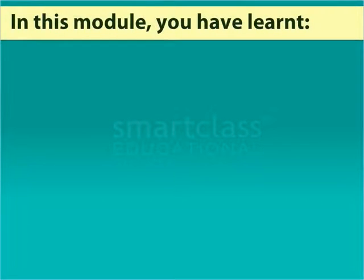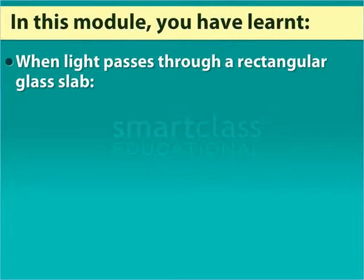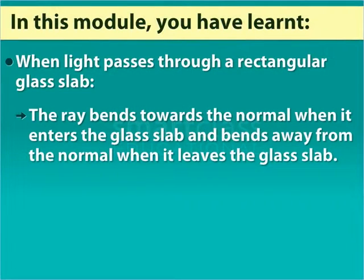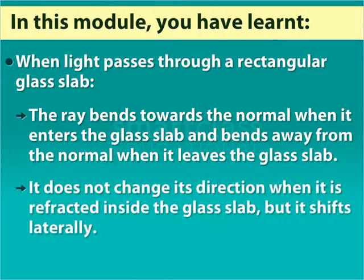In this module you have learned: when light passes through a rectangular glass slab, the ray bends towards the normal when it enters the glass slab and bends away from the normal when it leaves the glass slab. It does not change its direction when refracted inside the glass slab, but it shifts laterally.